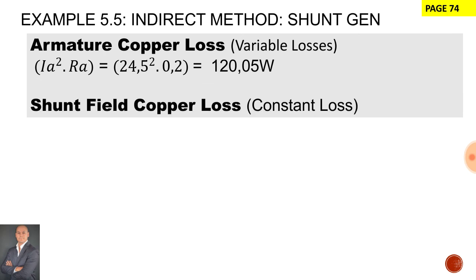To calculate the shunt field copper loss which is considered to be a constant loss we will say I shunt multiplied by the terminal voltage. The shunt current is 2 amps and the terminal voltage is 200. Therefore the shunt field copper loss is 400 watts.